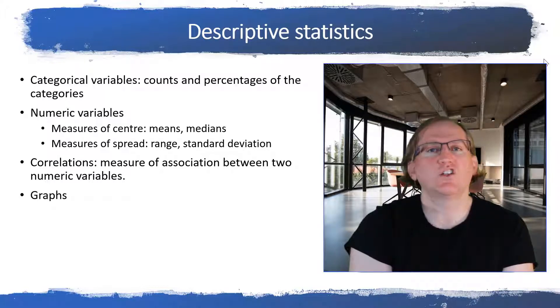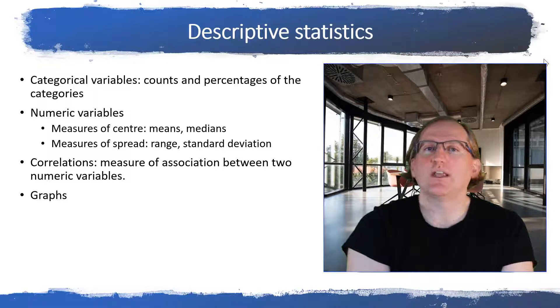We sometimes will see correlations. So a correlation is a measure that takes two numeric variables and tells me about the strength of the association between them. So is it positive or negative? So when one goes up, do we tend to see the other one going up or going down? So negative would mean that one goes up, the other one tends to go down. Positive would mean when one goes up, the other one tends to go up. So correlations give us an indication just between two numeric variables, how they might be associated with each other. The other thing that we will sometimes see is some graphs.